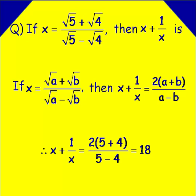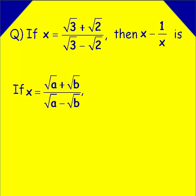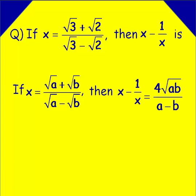Now we see another similar problem. If x equals root 3 plus root 2 divided by root 3 minus root 2, then find x minus 1 by x. In this problem we have to evaluate the difference of the terms x and 1 by x. For this model also we have a shortcut: if x is in the form root a plus root b divided by root a minus root b, then x minus 1 by x equals 4 into square root of ab divided by a minus b.